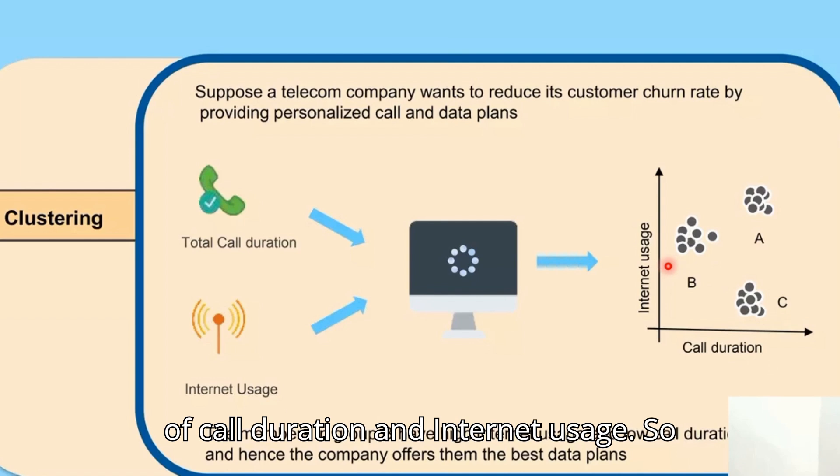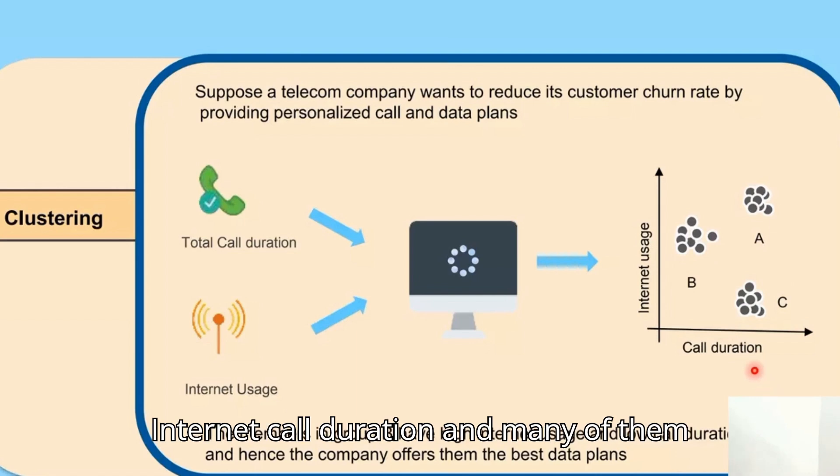Group A uses both call duration and internet usage. We can segregate customers so the telecom company easily identifies the type of customers using both, and many are using either call duration or internet usage.